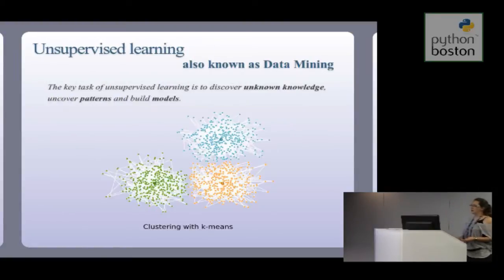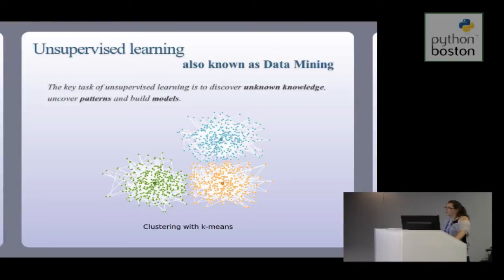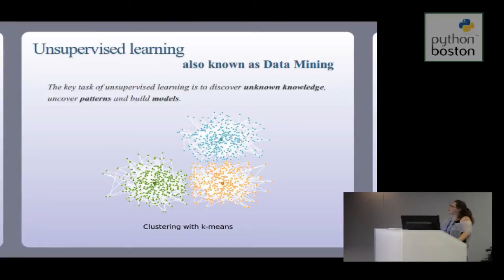There are two big things in machine learning. The first is unsupervised learning, where the idea is to discover patterns in your data — also known as data mining. Here I've displayed data points and used a clustering algorithm, a very simple one, to detect clusters and group points by cluster. K-means is probably the thing you've seen if you know very little about unsupervised learning, because everyone implements it — it's like 10 lines of code.